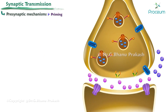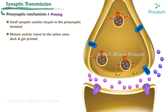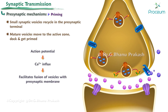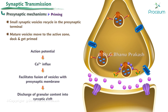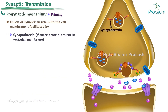Normally, small synaptic vesicles recycle in the presynaptic terminal. The mature vesicles move to the active zone, dock, and get primed. When an action potential arrives, calcium influx facilitates fusion of vesicles with the presynaptic membrane, causing discharge of granular content into the synaptic cleft. Fusion of the synaptic vesicle with the cell membrane is facilitated by synaptobrevin, a v-SNARE protein present in the vesicular membrane.